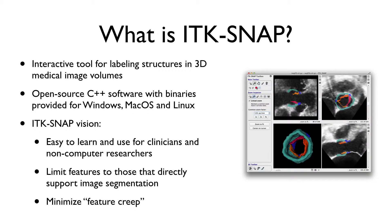This course is about a tool called ITK-SNAP, which is an open source interactive tool for labeling anatomical structures in 3D medical image volumes. It's written in C++, it's an open source end user GUI tool, and you can download binary executables for Windows, Mac OS, and Linux. There are a lot of tools out there for image processing and image analysis, and the main vision for ITK-SNAP has been to make a somewhat limited feature set so that the tool has a fairly gentle learning curve.